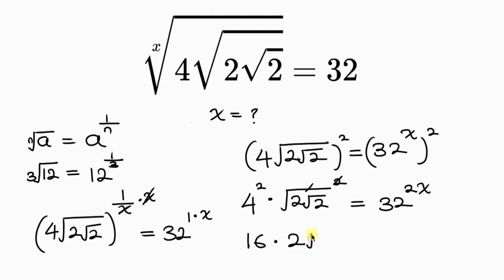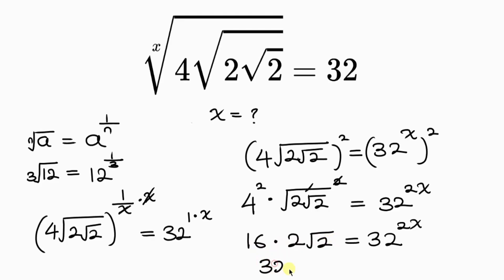So 16 times 2 root 2 gives 32 root 2, which is equal to 32 to the 2x on the right.